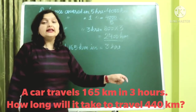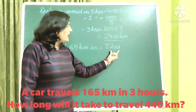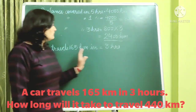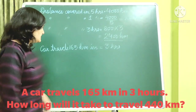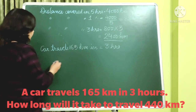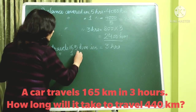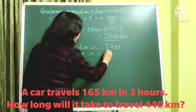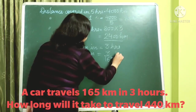The question asks: how many hours will it take to complete 440 km? Since we are asked about hours, we make our statement so that hours equals something. The car travels 165 km in 3 hours, so the car travels 1 km in 3 divided by 165 hours.